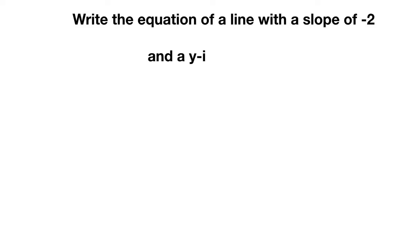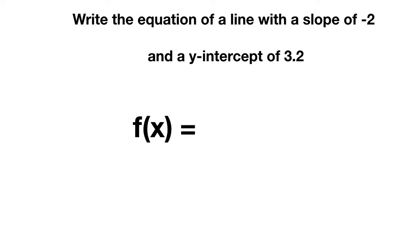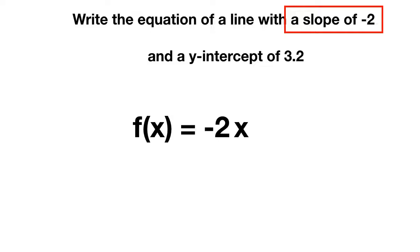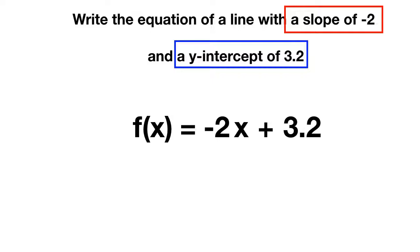Let's do one of these together. You're asked to write the equation of a line with a slope of negative 2 and a y-intercept of 3.2. We can write f of x is equal to — the slope is negative 2, so we'll write negative 2x. The y-intercept is 3.2, so we'll add 3.2. Our equation is f of x equals negative 2x plus 3.2.